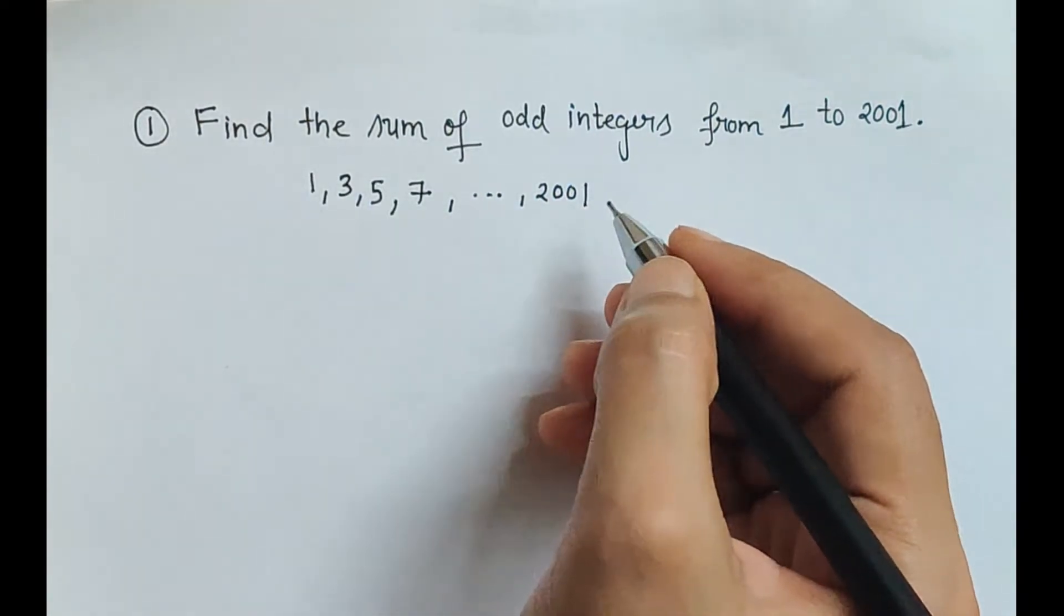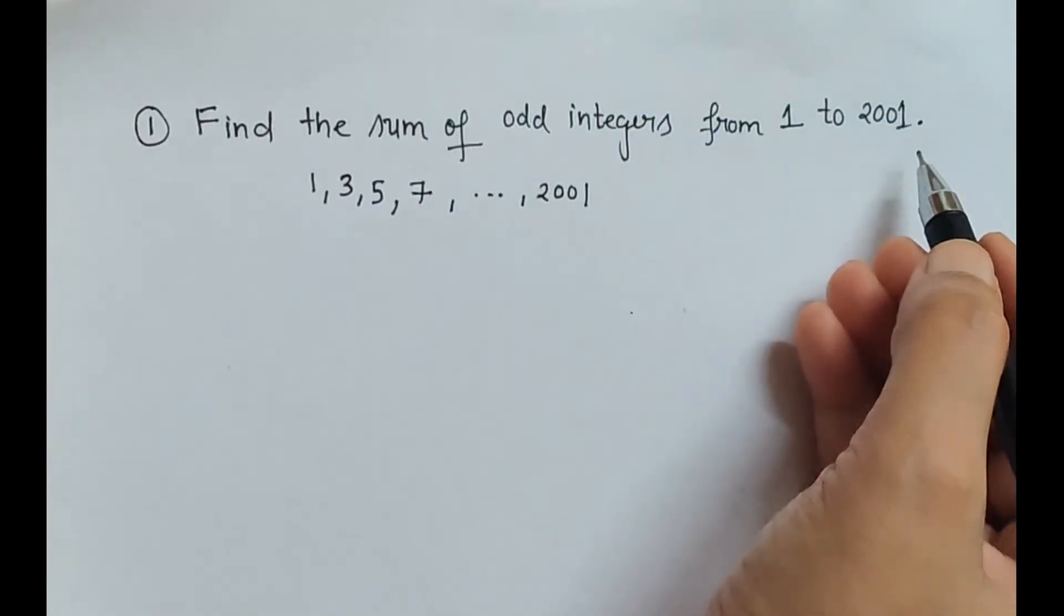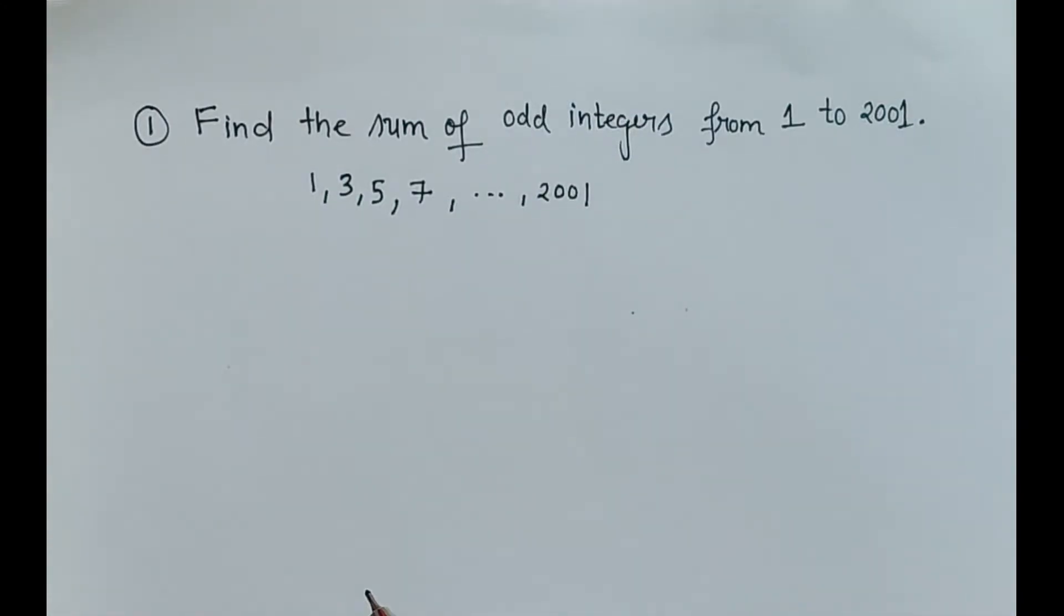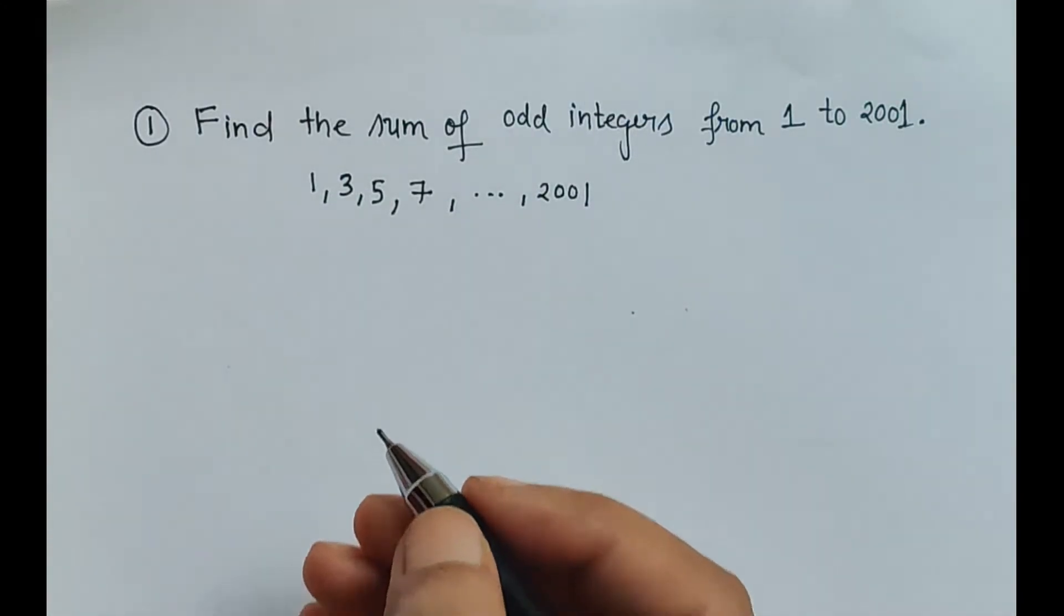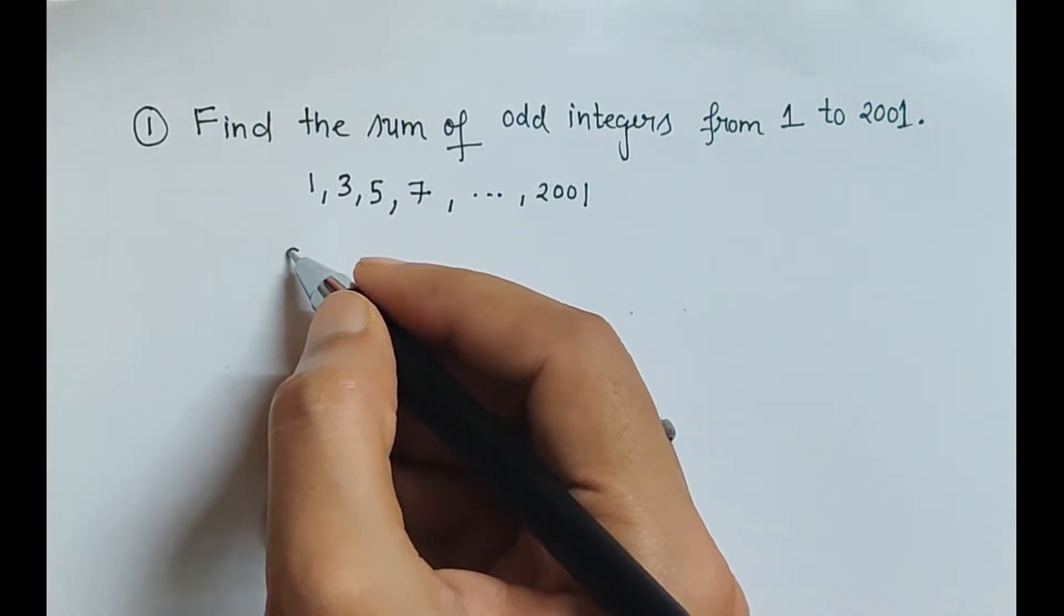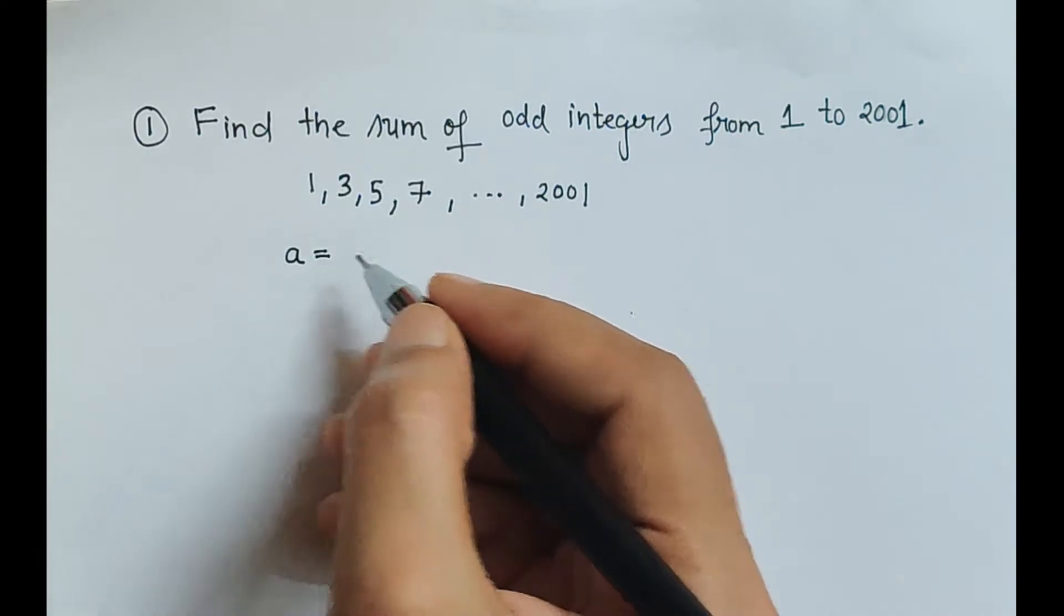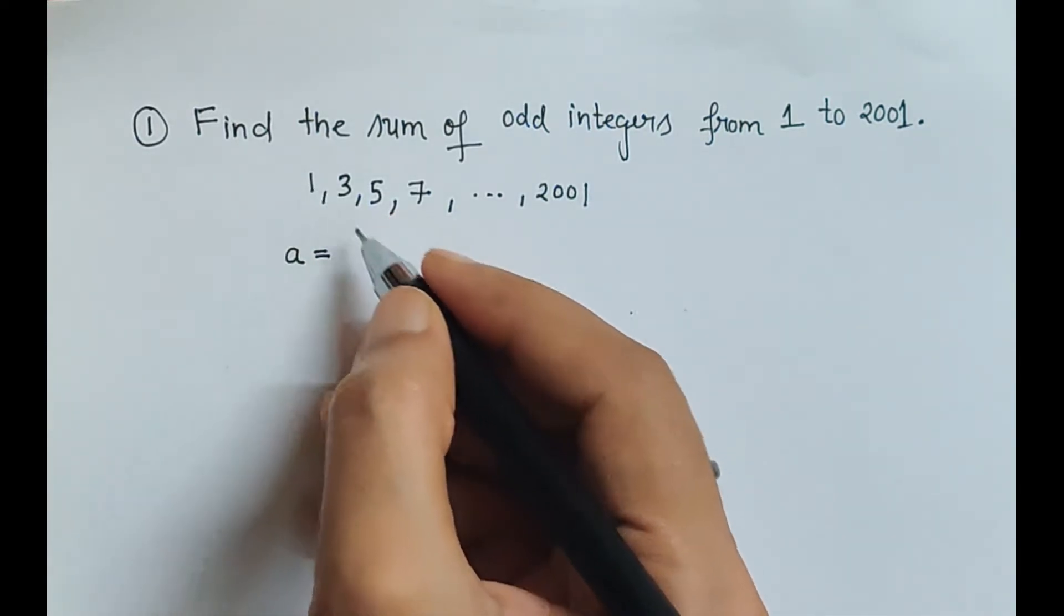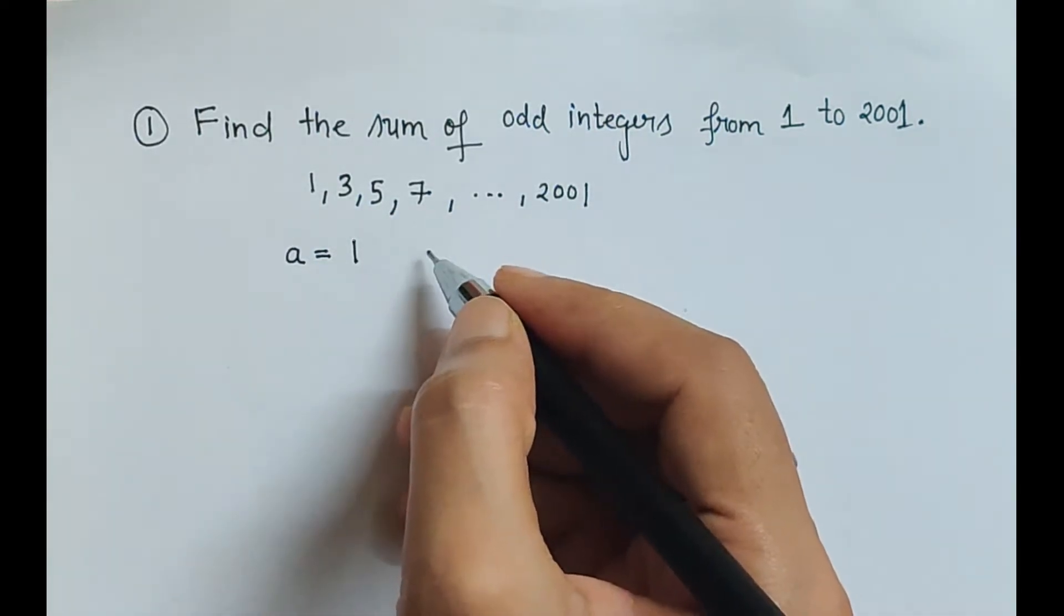Now here, as we know in arithmetic progression we have a term called first term which is denoted by a. So here first term in the sequence is 1.